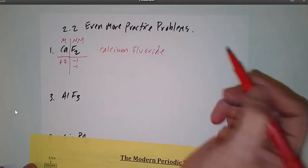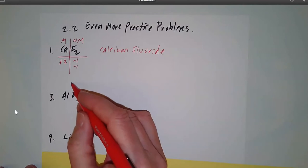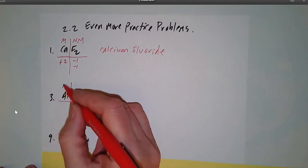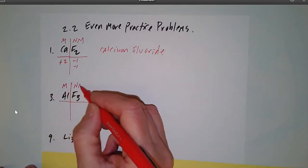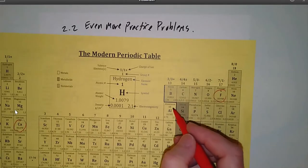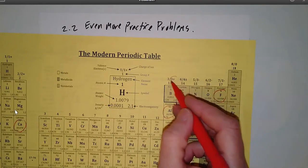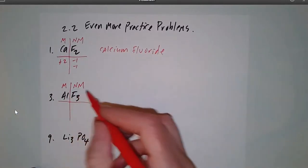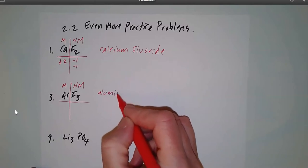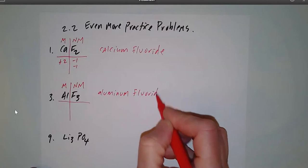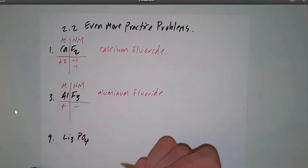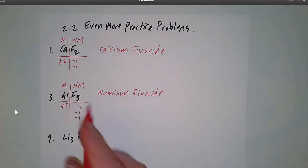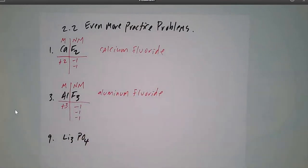You can pause and try naming it yourself, then come back to check. The next one is AlF₃. Aluminum is my metal — it's a plus three — and fluorine is my non-metal at minus one. It's binary with just two elements, so the name is aluminum fluoride. Aluminum is the positive side, fluoride is the negative side, and there are three fluorines.